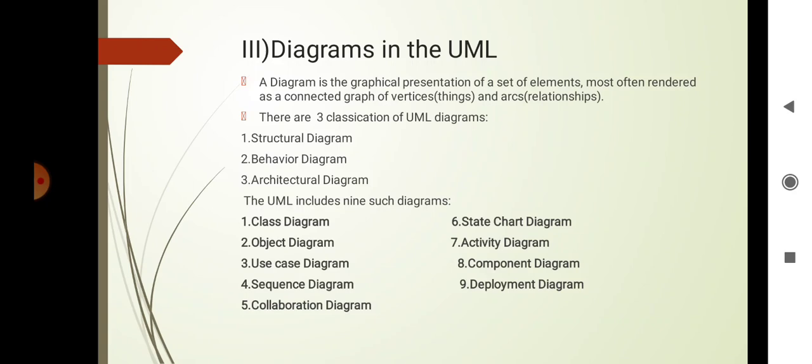The third classification is the architectural diagram. It is a subset of behavioral diagram which emphasizes object interaction. This diagram includes communication, interaction overview, sequence, and timing diagrams.